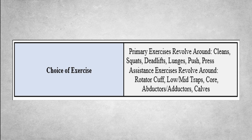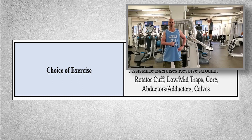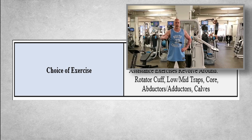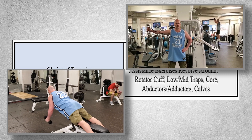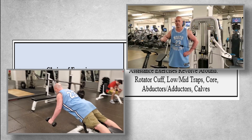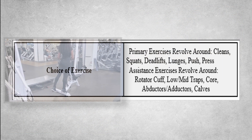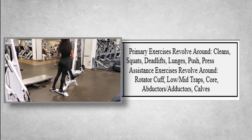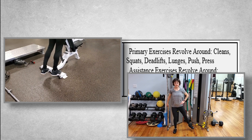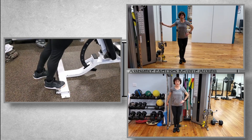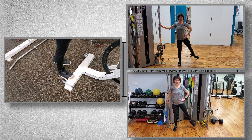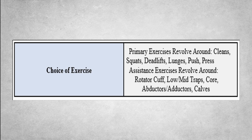Instead, there should be a method to the madness of programming for assistance exercises. More specifically, assistance exercises should revolve around things like rotator cuff strengthening, and low and mid trapezius strengthening, because both are great for shoulder and neck health and promoting strength balance around the shoulders. Other assistance exercises that should be included are calf raises, and hip exercises in the frontal plane such as adductors or your groin, and abductors or the outside of your butt. And of course we can't forget about strengthening the core. Since the core is already being strengthened with your primary exercises, there's really no need to go overboard — just make sure you include both movers such as crunch variations, rotations, and side bending, and stabilizers such as plank variations or Pilates mat exercises.